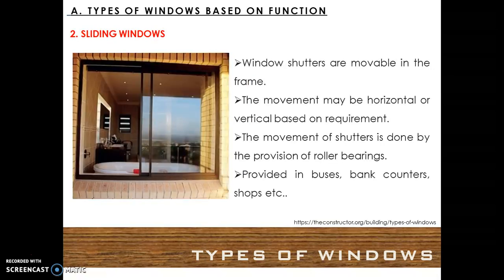Sliding windows. The window shutters are movable in the frame. The movement may be horizontal or vertical based on requirements. The movement of shutters is facilitated by the provision of roller bearings. Sliding windows are commonly provided in buses, banks, bank counters, shops, etc.